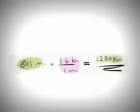Now if I multiply that 803 miles by 1.6 kilometers per mile, I get 1280 kilometers approximately.